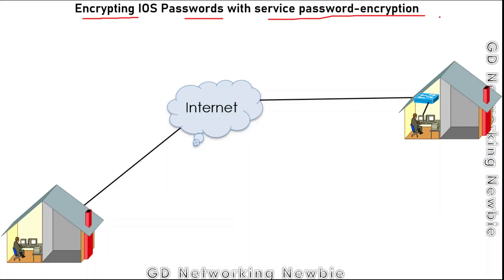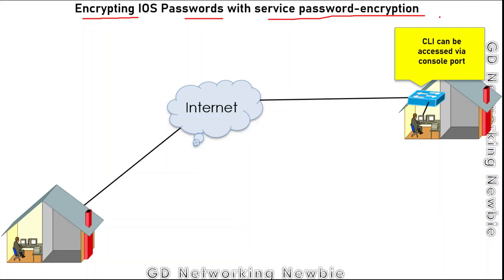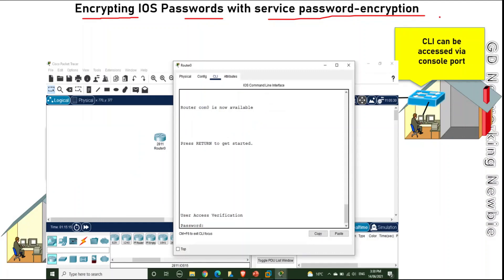Routers and switches can be accessed via their command line interface. The CLI can be accessed through a console port, or remotely using Telnet or Secure Shell. We configure passwords so that only authorized users can access the device — when you try to connect, you will be prompted for a password as shown on screen.